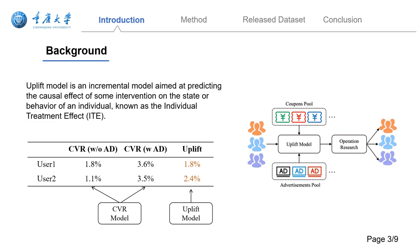Uplift Modeling is designed to estimate the incremental gain an individual might experience under varying interventions. To put it simply, while traditional CVR models predict the likelihood of conversion, Uplift Models delve into how the conversion rate might change with or without an advertisement being shown.